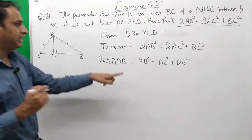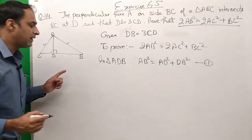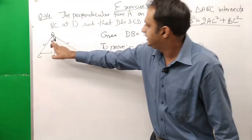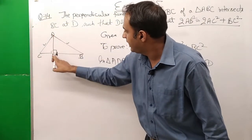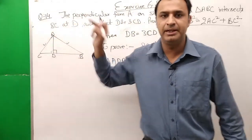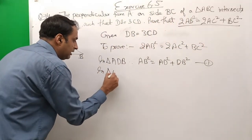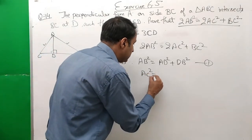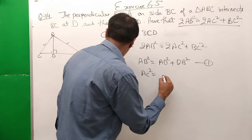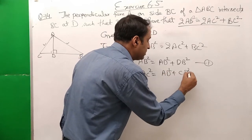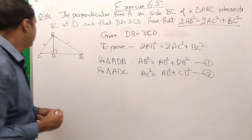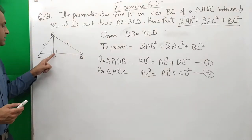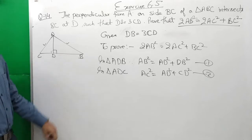This is equation 1: AB² = AD² + DB². Similarly, for the second triangle, we need AC². AC² will come from triangle ADC. In triangle ADC: AC² = AD² + CD². This is equation 2.